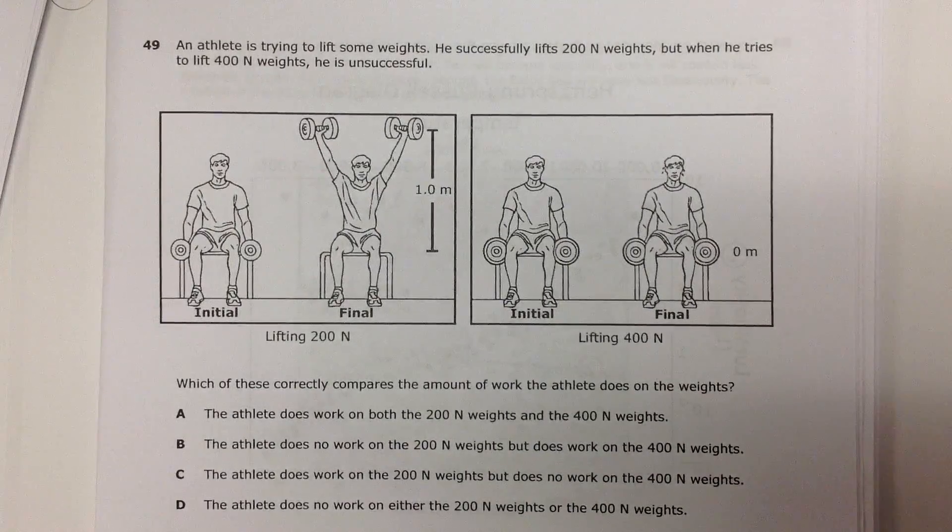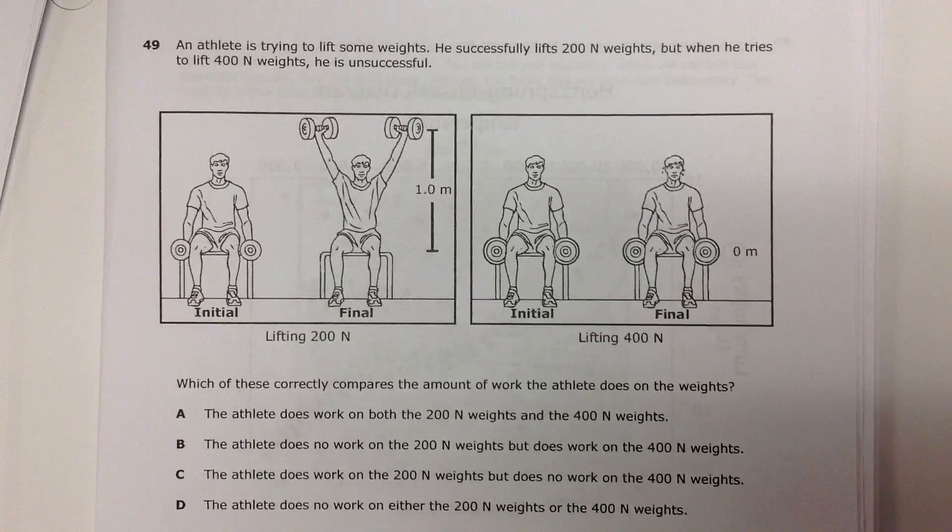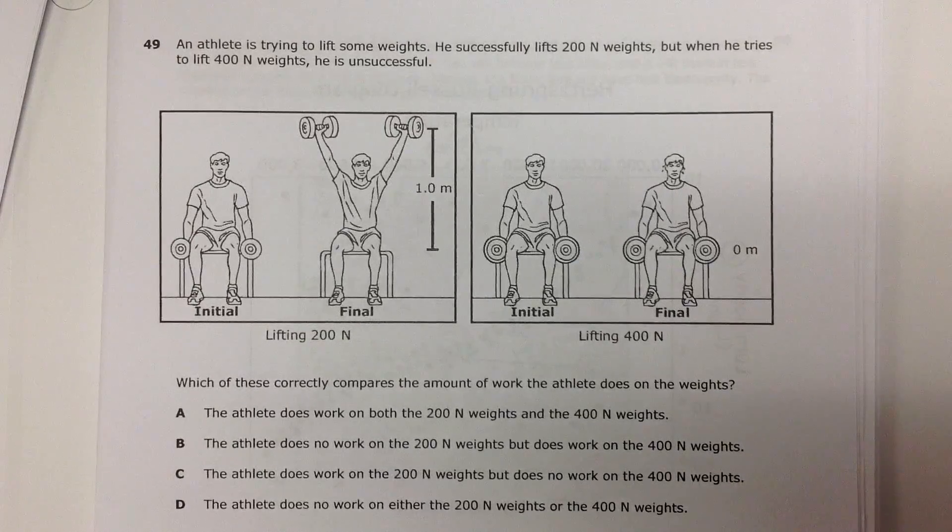Alright, an athlete is trying to lift some weights. This is question 49, by the way. He successfully lifts 200 Newton weights, but when he tries to lift 400, he is unsuccessful.